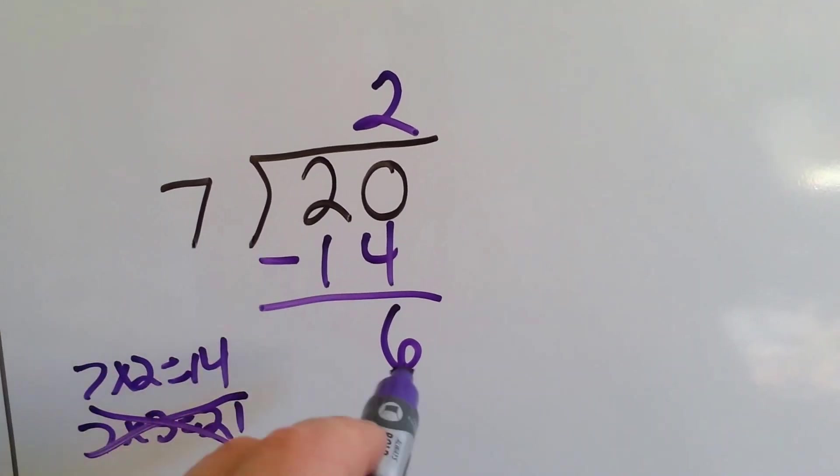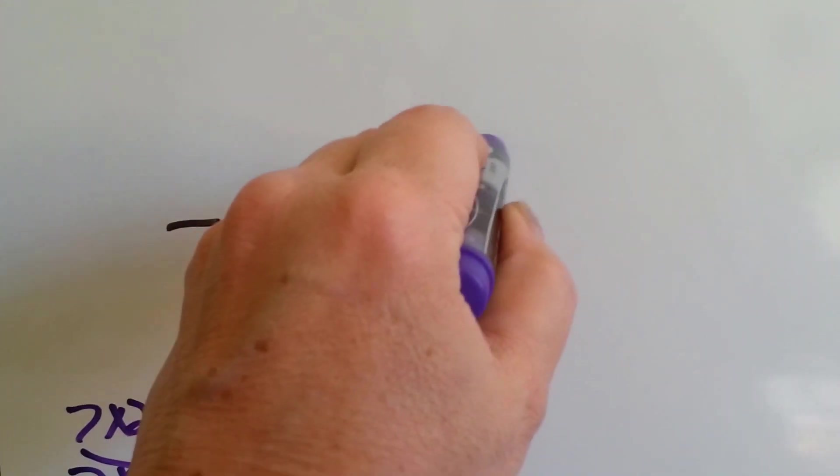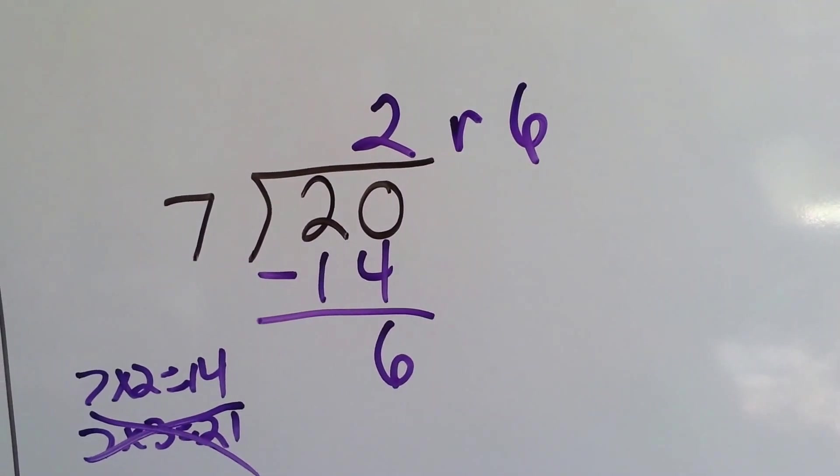20 minus 14 is 6. Can a 7 fit in this 6? No, it can't. It needs one more. So we have 2 remainder 6.